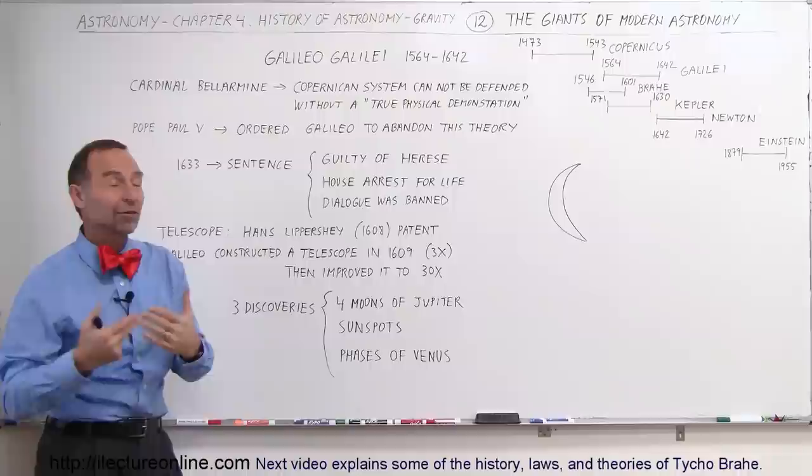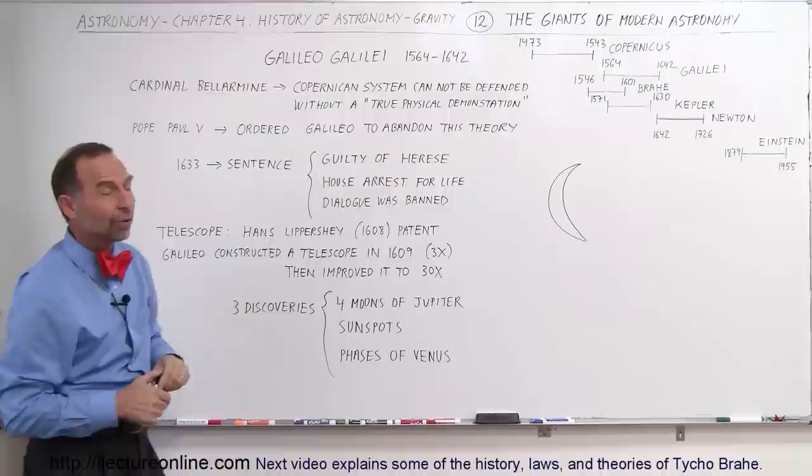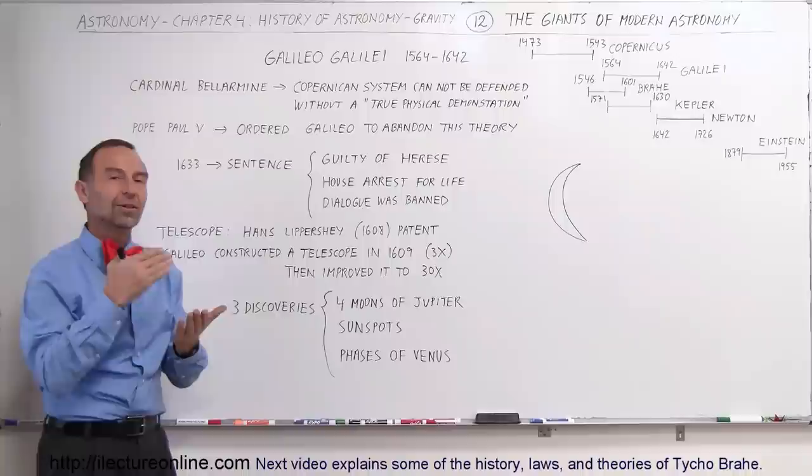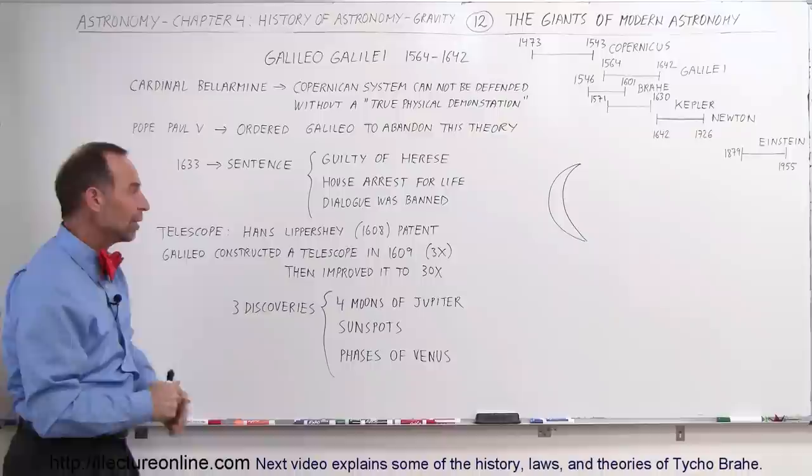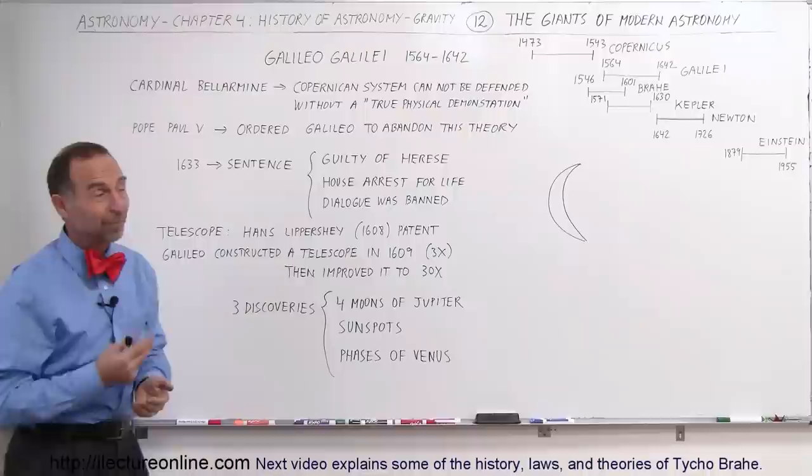His whole life, until he died in 1642, about nine or ten years after he went under house arrest, he determined that yes, this is true, the Earth is not at the center, but the Sun is at the center of the universe. He worked his whole life in support of that concept and trying to prove it. Even when he was under house arrest and threatened with torture, he just wanted the truth to come out, and he succeeded.